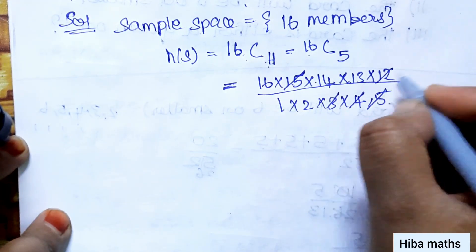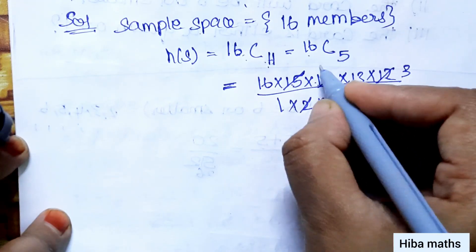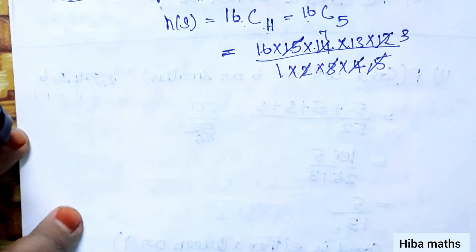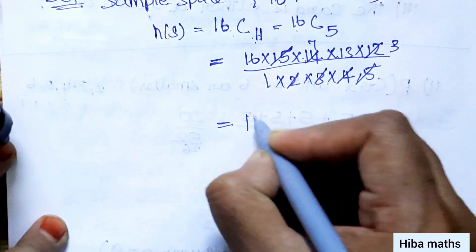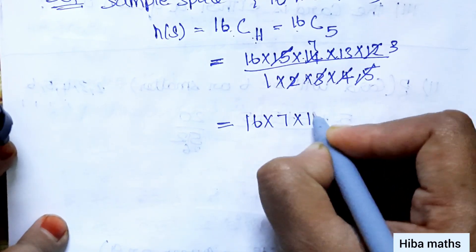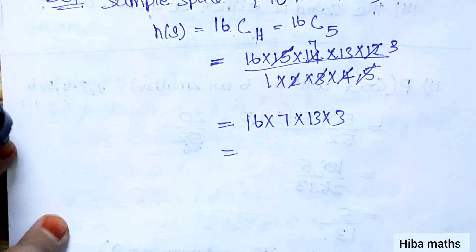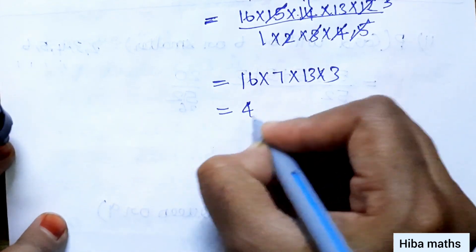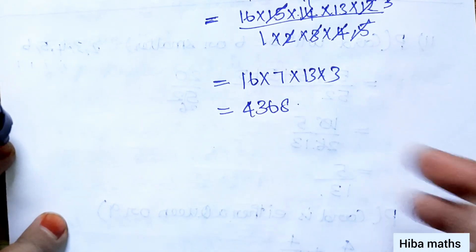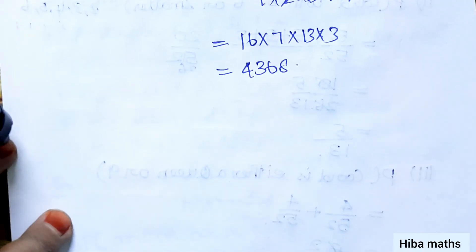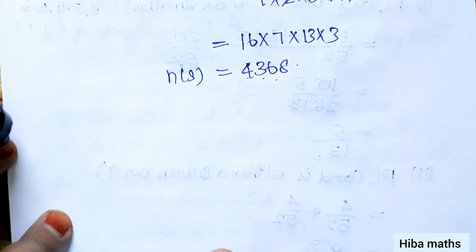Simplifying: 16 into 7 into 13 into 3. We need to solve for the product, giving us 4368 as the value of 16C11.